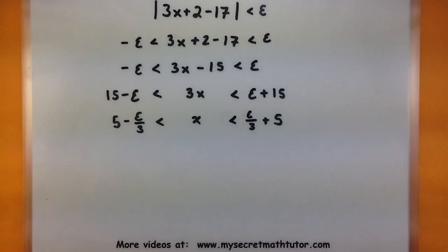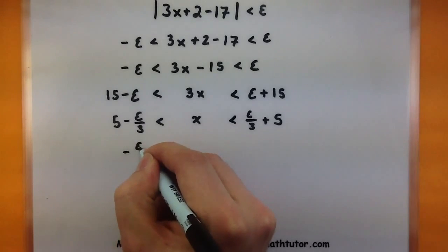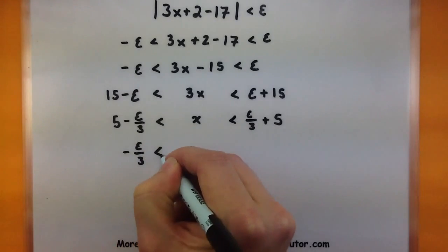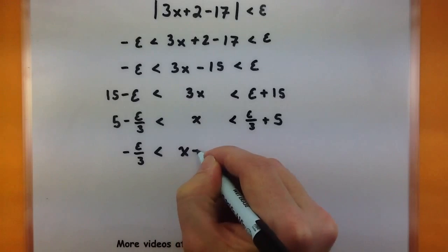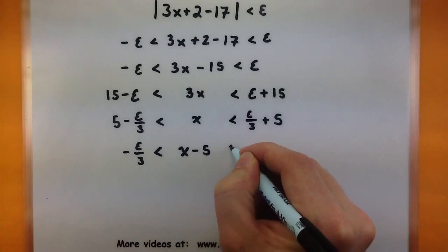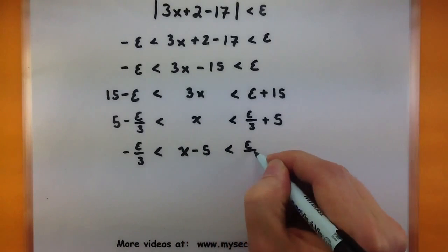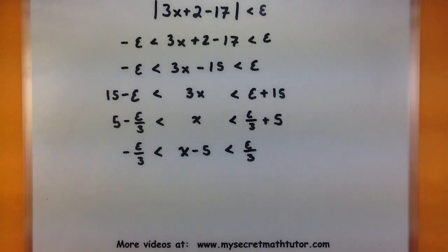So to make it match better, I will subtract 5 from everything. So I'll subtract 5 from this side. So I know that x minus 5 must be between a negative epsilon over 3 and an epsilon over 3.